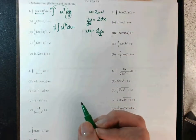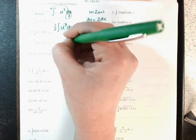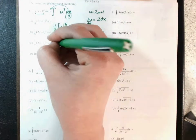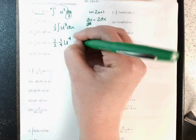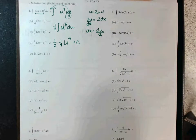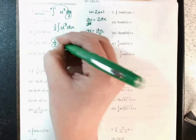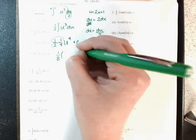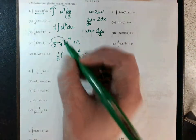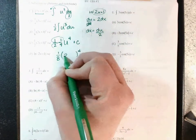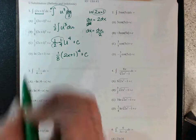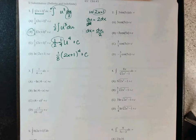Work your antiderivative: add 1 to 3 to get u to the 4th, then divide by 4, giving one-fourth. Don't forget the one-half on the outside plus c. Combine the fractions — multiply straight across top and bottom — that gives 1 over 8. Then plug u back in: it's one-eighth times (2x + 1) to the fourth, plus c. That's answer choice B.